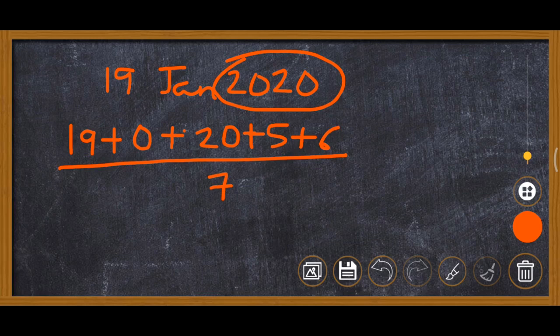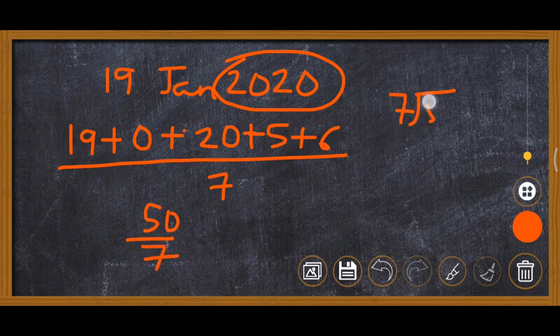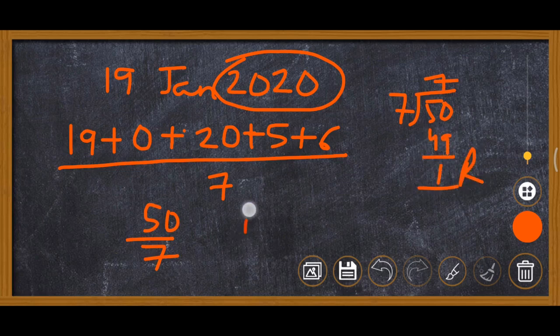Total comes to 50. Divide 50 by 7: 7 × 7 = 49, remainder is 1. When remainder is 1, we check the day code table — 1 is the code for Sunday. So 19th January 2020 was a Sunday.